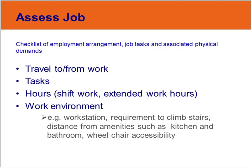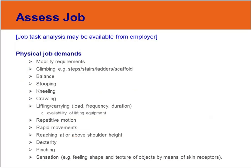The next slides list some important attributes of the work and the work environment that need to be considered in helping to plan a safe return to work. Travel to and from work is important, as is the work environment — including any requirement to climb stairs, mobilise to amenities, or any requirement for wheelchair accessibility. It's also important to obtain information about the range of potential physical job demands, either from discussion with the patient and employer, or from a job task analysis.